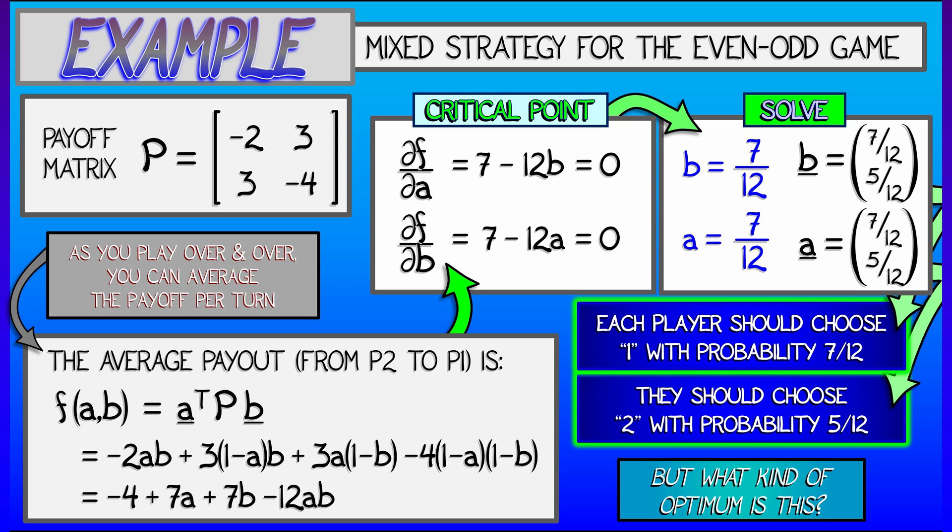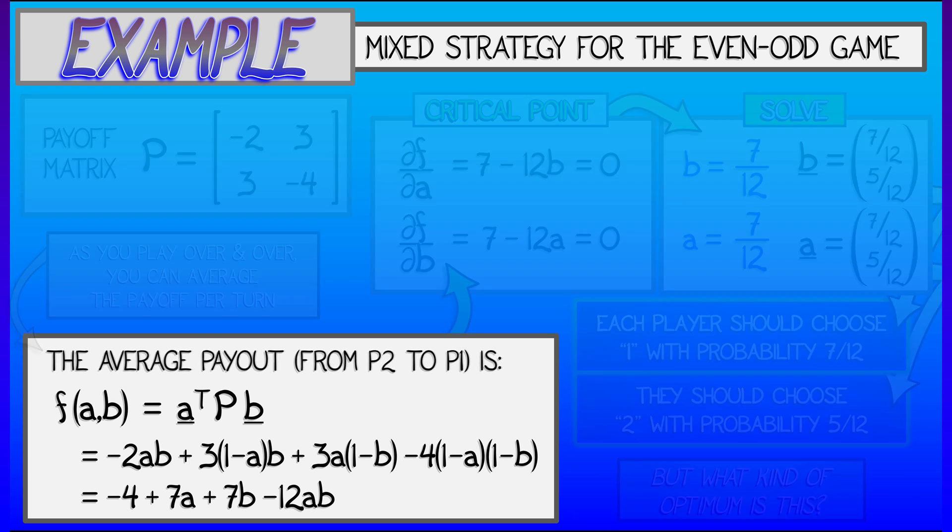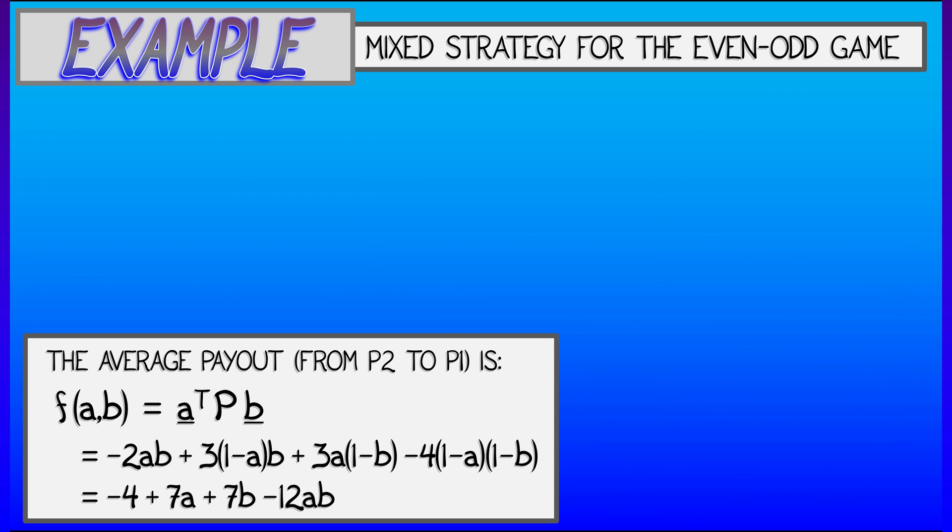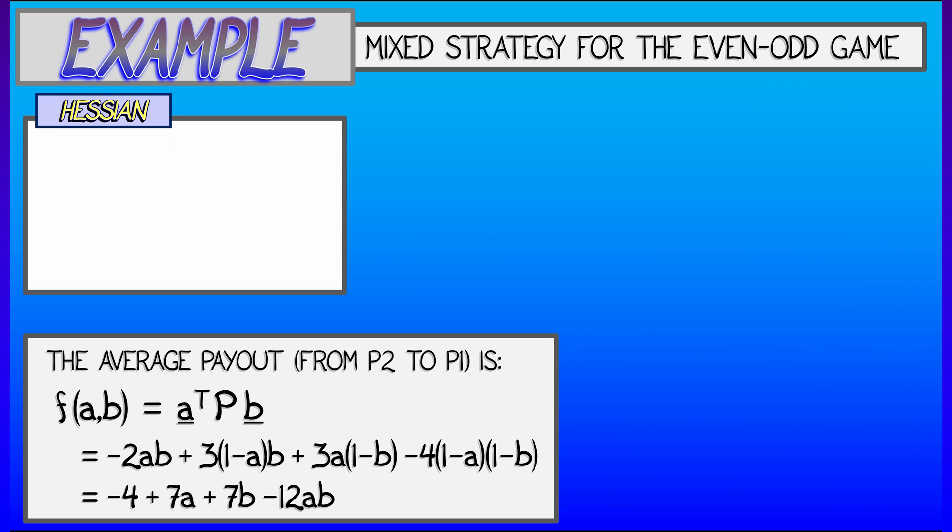But wait a minute. What kind of optimum is this? Is this a max? Is this a min? Oh wait, we can figure this out. What do we do? We compute the second derivative. Let's start doing that. What are the second partial derivatives? Well, it's pretty easy. We get zero, negative 12, negative 12, zero for the Hessian. And now, what type of critical point is it? It's a saddle. It's a saddle. Trace of zero, determinant is negative.